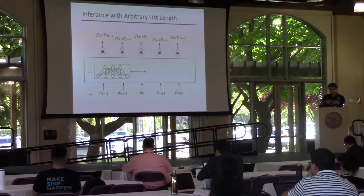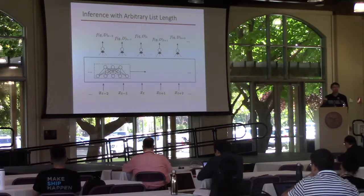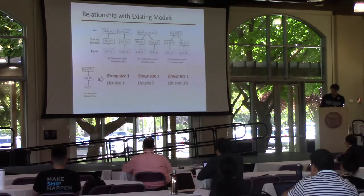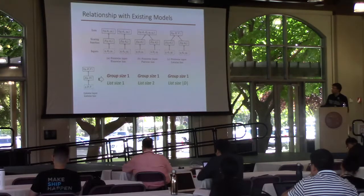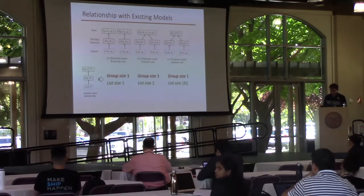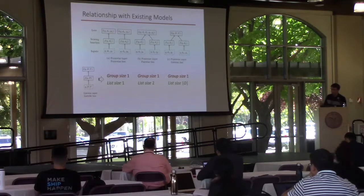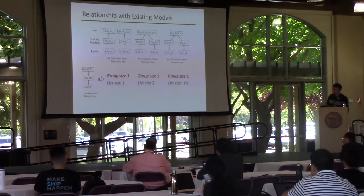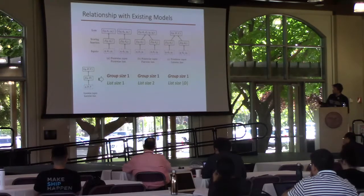If this approximation seems too aggressive, you can also use other methods, such as picking a small set of documents and comparing them to all documents. With this formulation, we can find the relationship between existing learning-to-rank methods and our group-wise scoring functions. The pointwise method is a group-wise scoring function with group size 1 and list size 1. The pairwise method is equivalent to group size 1 and list size 2. And the listwise method is group size 1 and list size d.